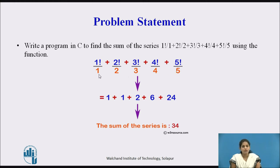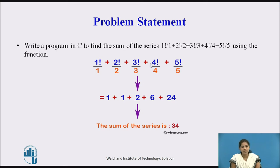We know that 1 factorial is 1, so 1 divided by 1 gives 1. Plus 2 factorial is 2, divided by 2 gives 1. Plus 3 factorial is 6, divided by 3 gives 2. Plus 4 factorial is 24, divided by 4 gives 6. Plus 5 factorial is 120, divided by 5 gives 24. Adding all these numbers, the sum of the series is 34.